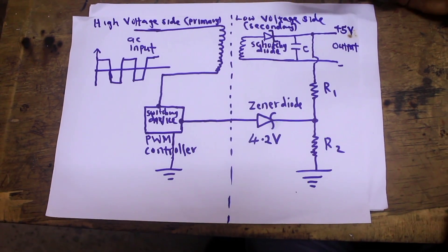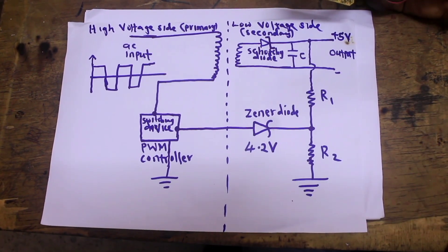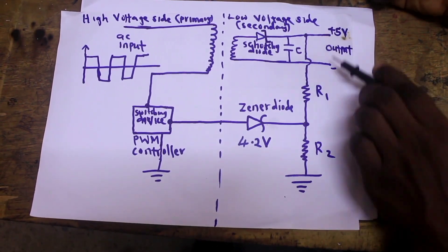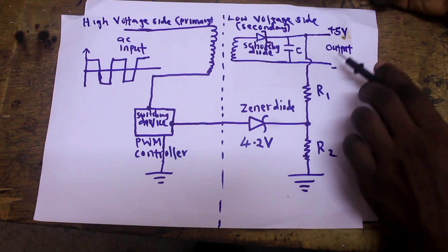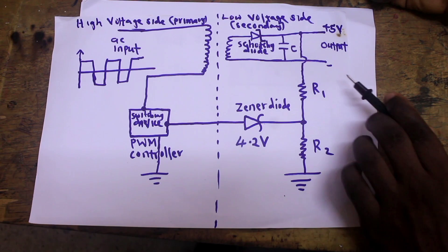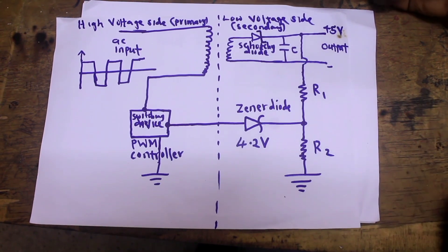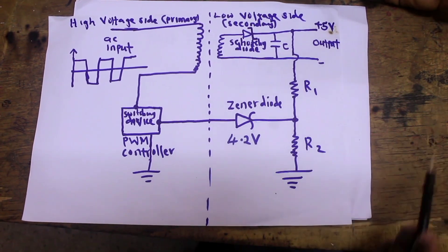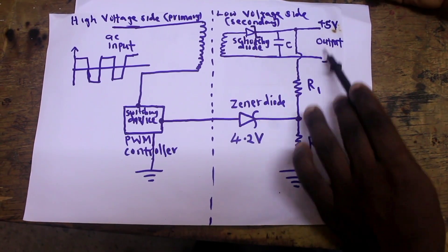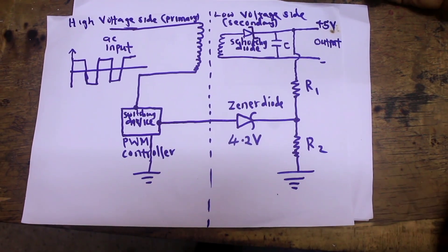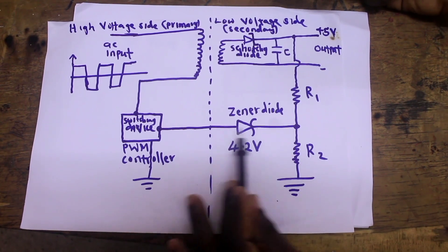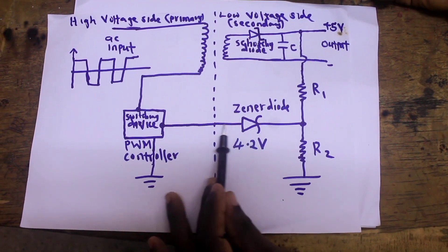When you plug your mobile charger to power or your SMPS power supply to power there is 5 volts at the output. When you connect a load like your mobile phone to the charger the load will draw current. When the load draws current this voltage will tend to drop to like 4 volts. When this voltage drops at the voltage divider the voltage which was 4.2 volts will go below 4.2 volts. When this voltage goes below 4.2 volts the Zener diode will not conduct because it is below its breakdown voltage.